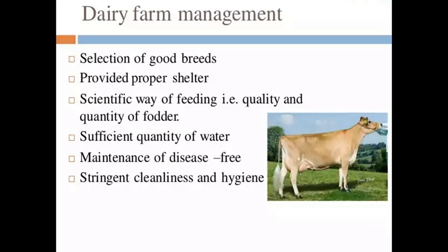Regarding breeds, there are milk breeds used for milk production, and draft breeds used for draught purposes. If we talk about cow breeds, there are indigenous breeds and exotic breeds. Indigenous breeds share common ancestors over 5–7 generations; examples are Gir, Sahiwal, and Red Sindhi cows.